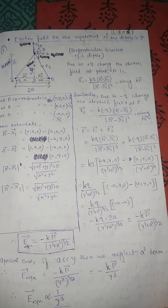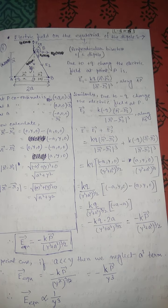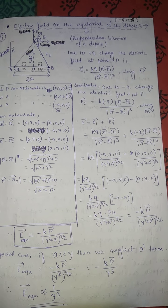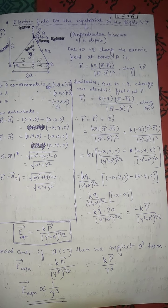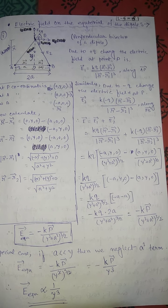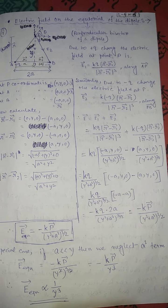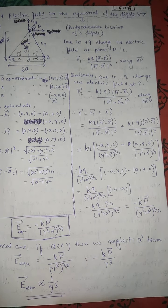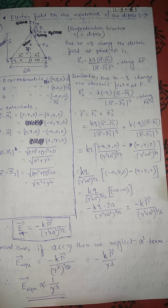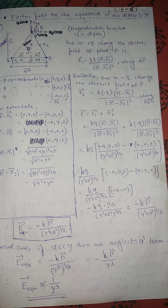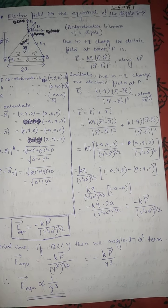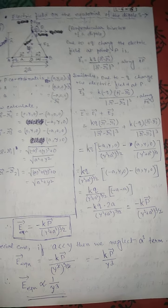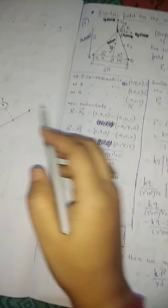In this video we derive another derivation — the electric field on the equatorial of a dipole. In the previous video we derived the electric field on the axis of an electric dipole. Equatorial means the perpendicular bisector of a dipole.